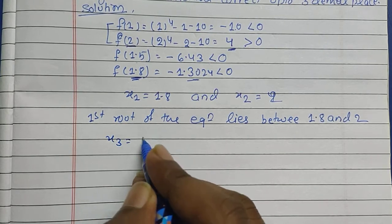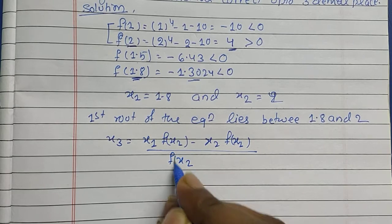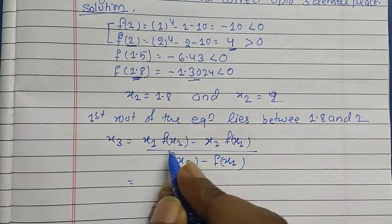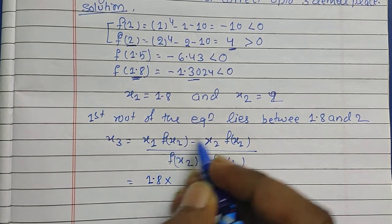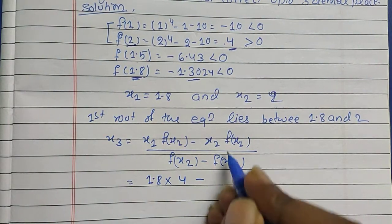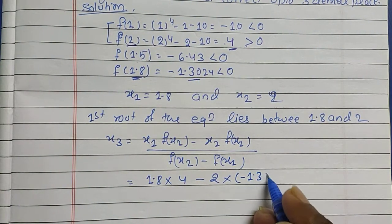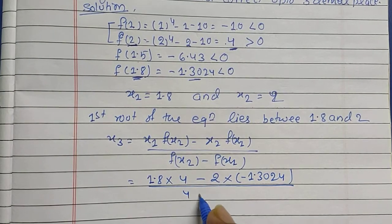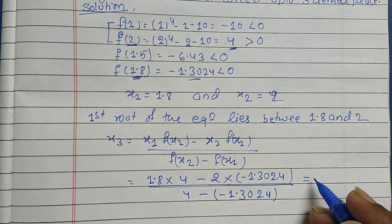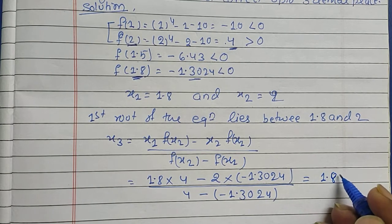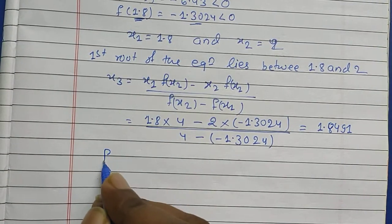The formula for the Regula Falsi method gives x3 = (x1·f(x2) − x2·f(x1)) / (f(x2) − f(x1)). Substituting: x1 = 1.8, f(x2) = f(2) = 4, x2 = 2, and f(x1) = f(1.8) = −1.3024. This gives: (1.8 × 4 − 2 × (−1.3024)) / (4 − (−1.3024)). Solving with a calculator gives x3 = 1.8491, taken to four decimal places.